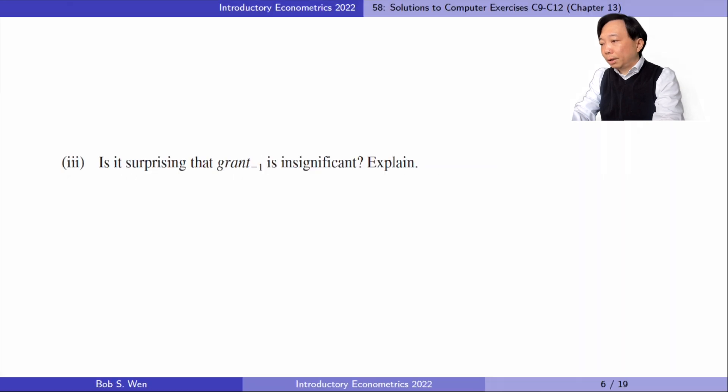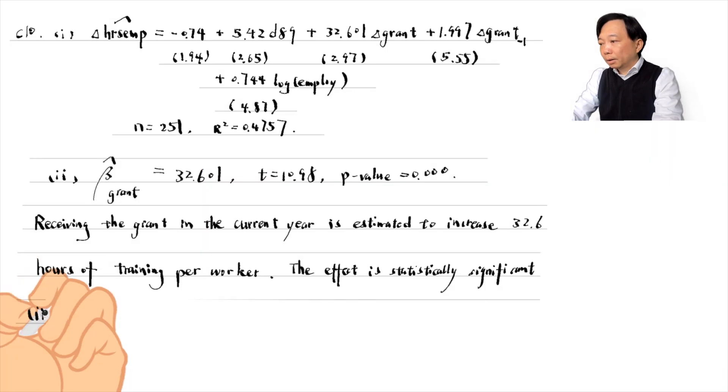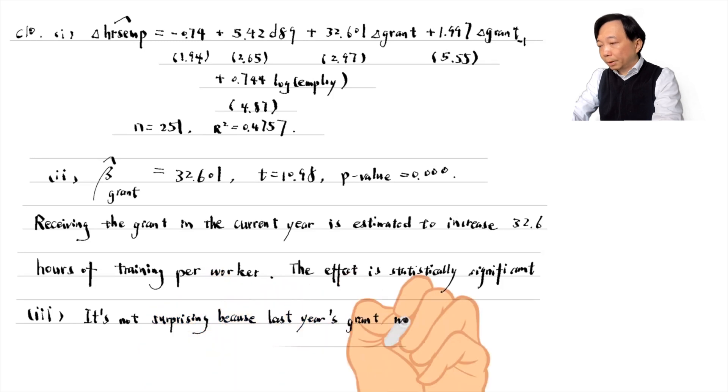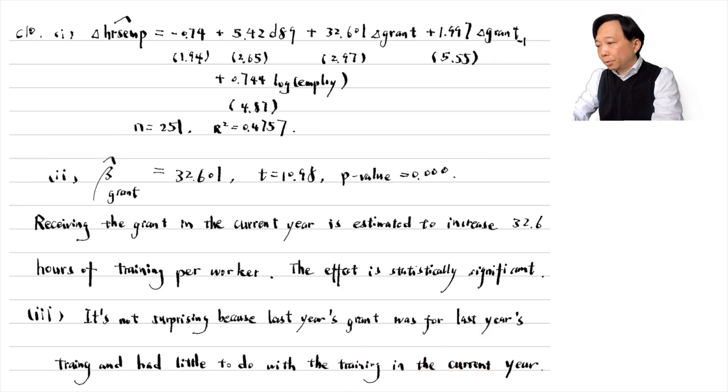In part 3, is it surprising that the first lag of the grant is insignificant? Explain. It is not surprising because last year's grant was for last year's training and had little to do with the training in the current year.